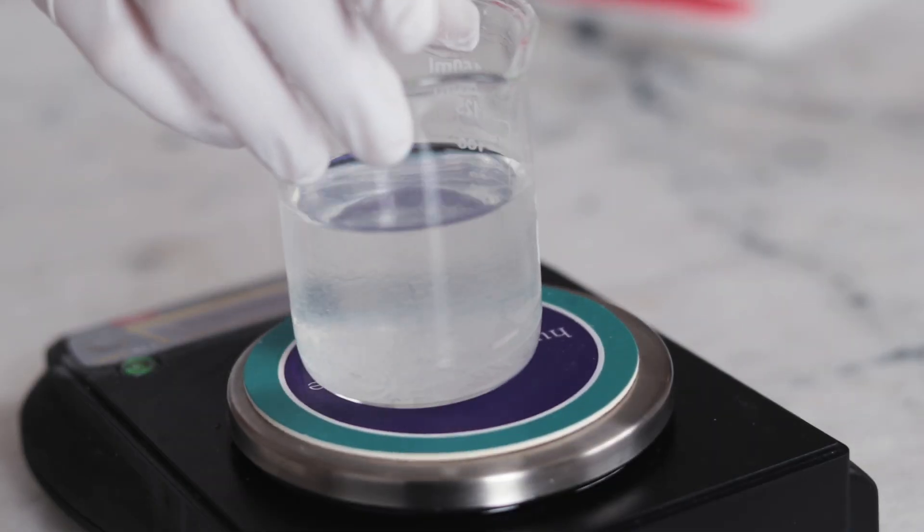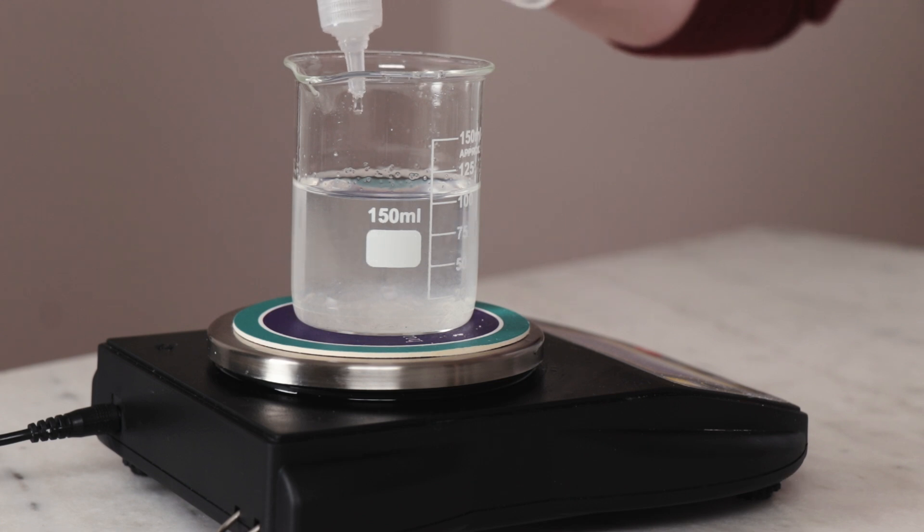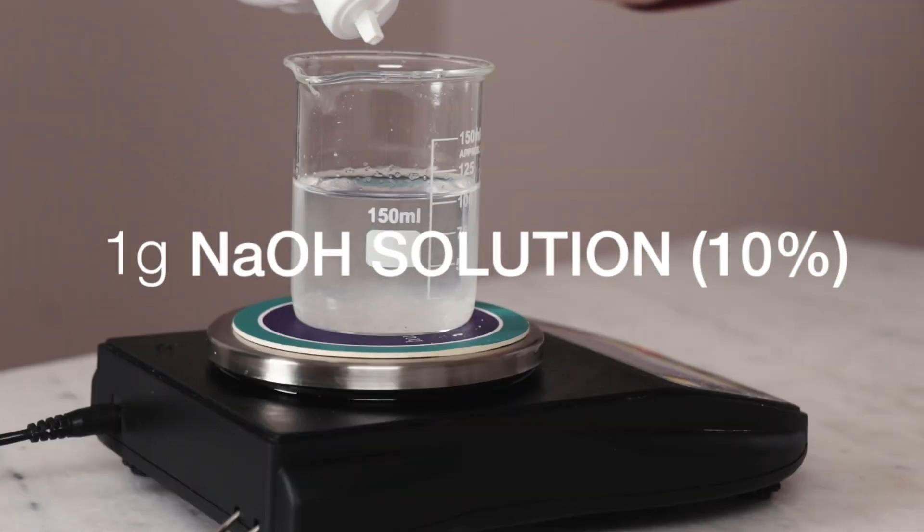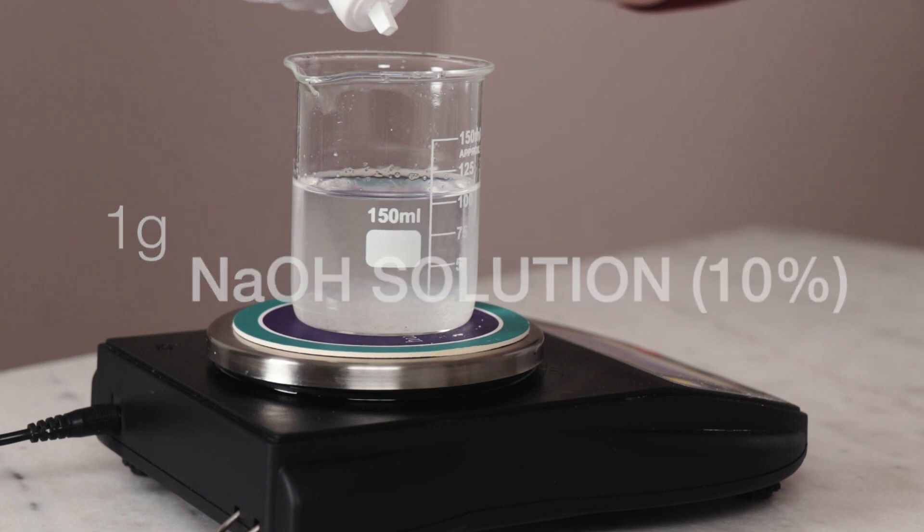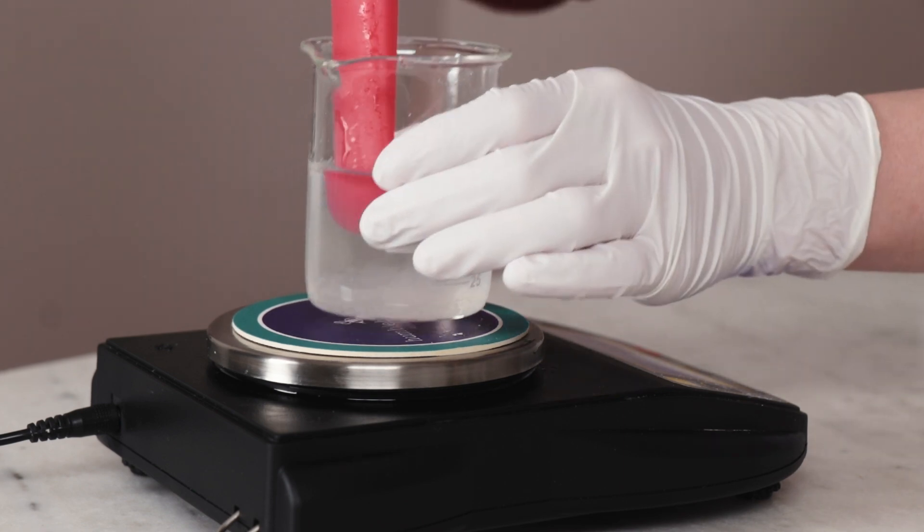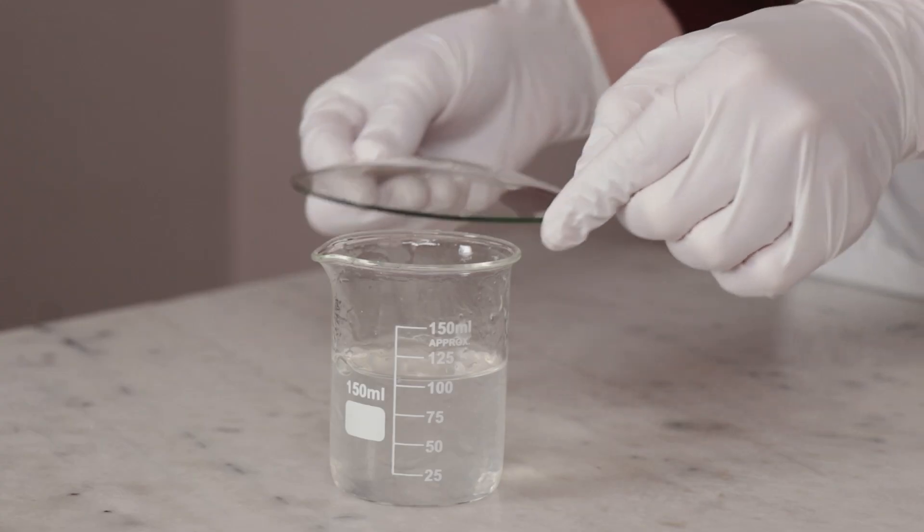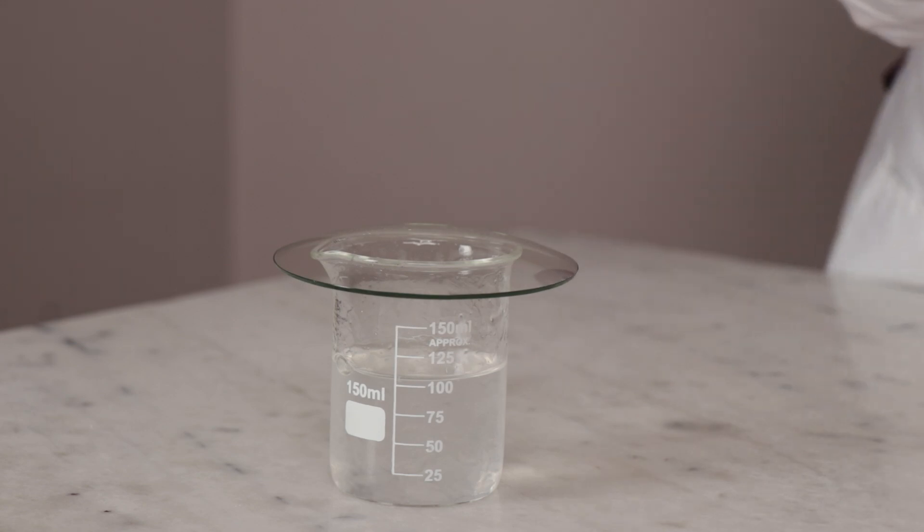Now it's time to add our last two ingredients. Weigh in 0.45 grams of liquid germol plus and 1 gram of a freshly made 10% sodium hydroxide solution. This bit of sodium hydroxide solution kickstarts the raising of the pH, but we will definitely still need more. Cover your beaker and leave everything to hydrate and dissolve. A few hours should be long enough, but overnight is very convenient if you are making this in the evening.